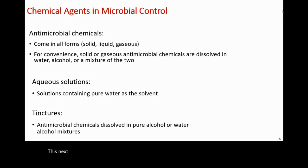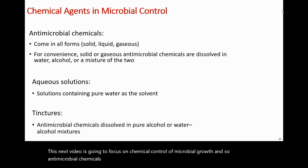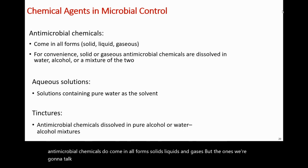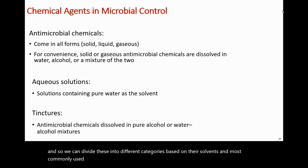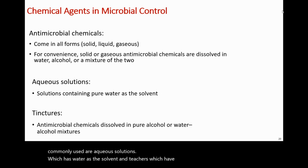This video is going to focus on chemical control of microbial growth. Antimicrobial chemicals come in all forms — solids, liquids, and gases — but the ones we're going to talk about come in liquid form, as those are the ones people tend to use most often. We can divide these into different categories based on their solvents: most commonly used are aqueous solutions, which have water as the solvent, and tinctures, which have an alcohol as a solvent.